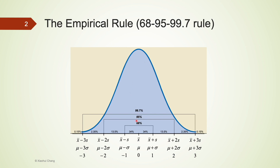95 percent of observations are within plus or minus two z-scores. The last number, 99.7 percent, means that nearly all observations — very close to 100 percent — fall within plus or minus three standard deviations of the mean.